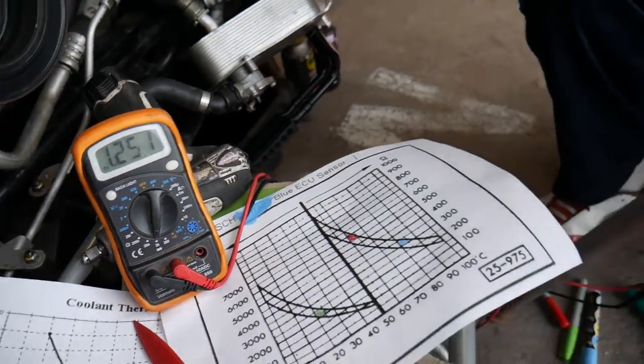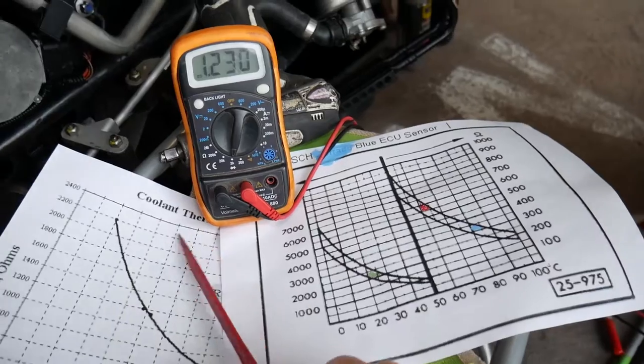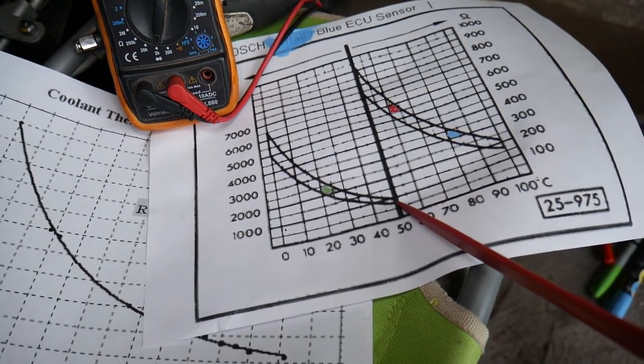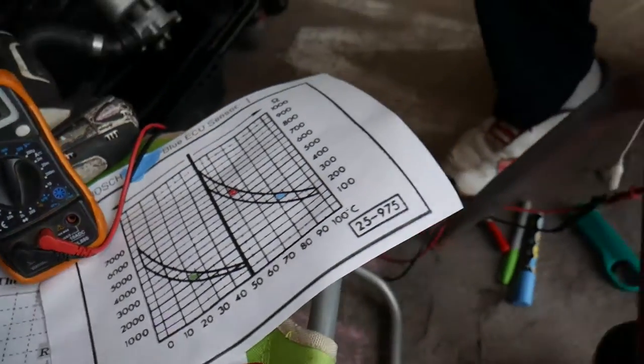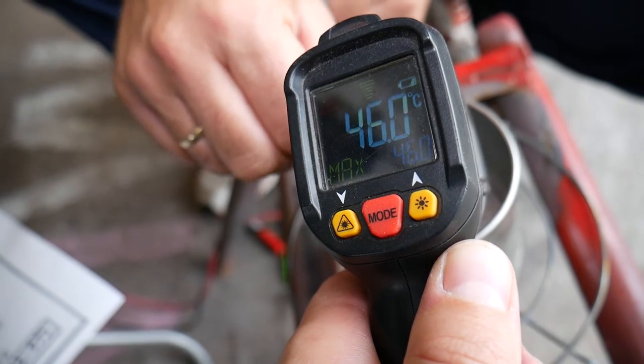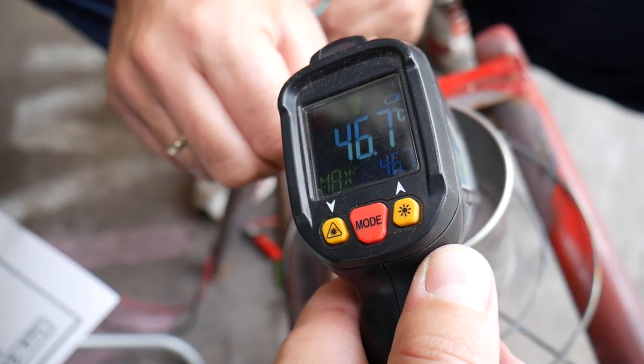Now we're going to compare it at 50 degrees. At 50 we should get about 750 to about 1000 ohms. So let's compare now. You can see how fast the water is heating up with that little torch.